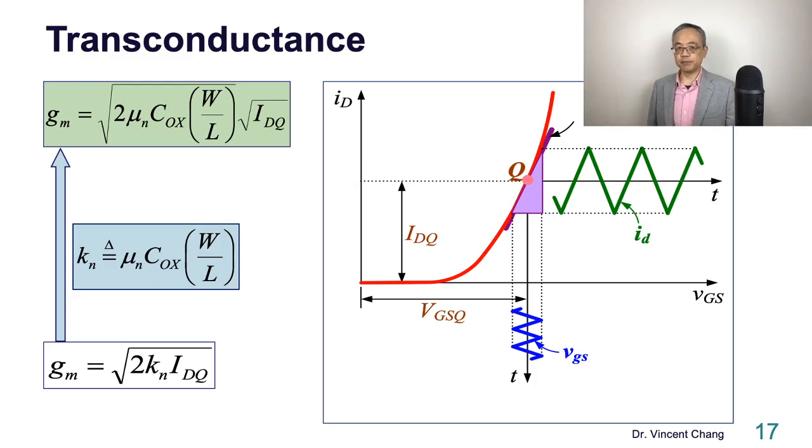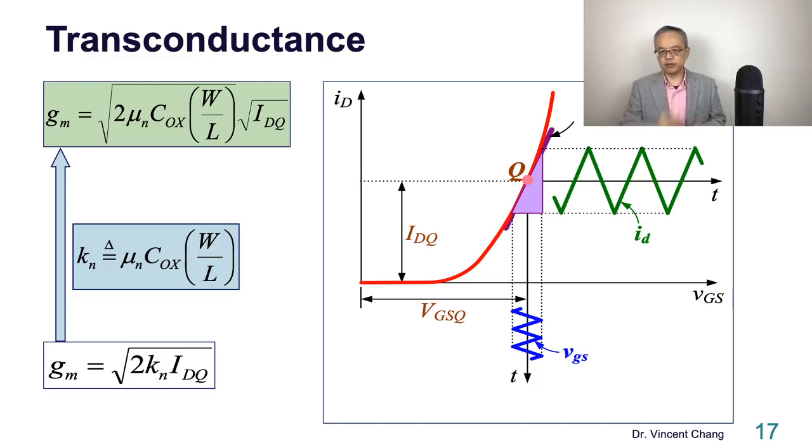Important. So once you face the AC amplifier analysis, you need to figure out the AC transconductance. You have to start with the DC analysis first. You figure out what is the DC bias current and plug in this, what's the transistor's parameter? It will tell you the value for the transconductance.